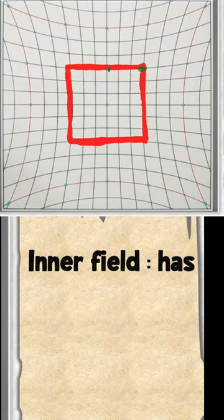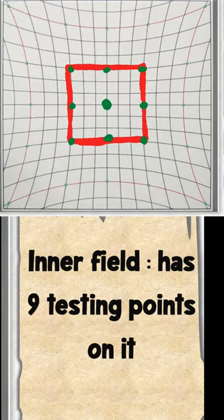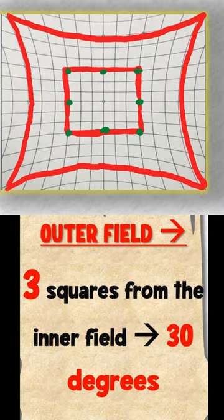This inner square actually has about nine testing points on it. Now let us discuss basically about the outer field.